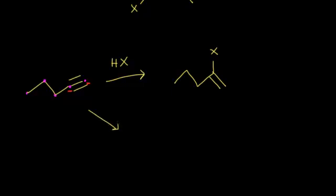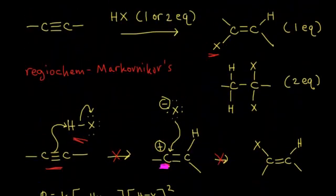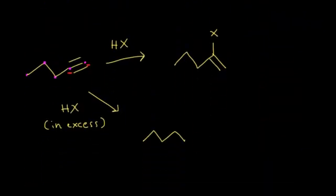Now let's do the addition of two equivalents of hydrogen halide — in excess. Starting again with five carbons, the product will also have five carbons. Going back to the general reaction, with two molar equivalents you end up adding both halogens to the same carbon, and it also follows Markovnikov regiochemistry. Thinking about which carbon gives the most stable carbocation, the carbon on the left is more stable, so we add both equivalents of the halogen there. The result is a geminal dihalide as our product. That's hydrohalogenation of alkynes with one or two molar equivalents of hydrogen halide.